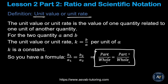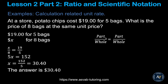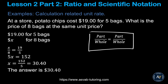Let's apply this formula to an example. At a store, potato chips cost $19 for five bags. What is the price of eight bags at the same unit price? Using the part over whole formula: write x over 8 equals 19 over 5. Make sure you are consistent — dollar amounts on the top and bag counts on the bottom on both sides.